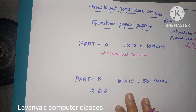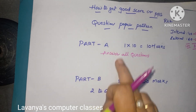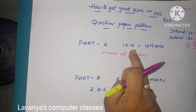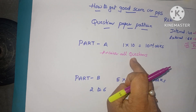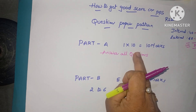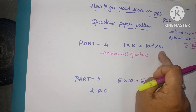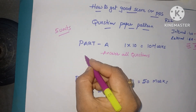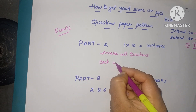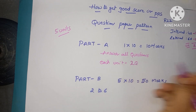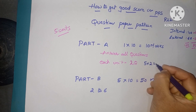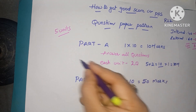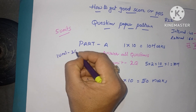The entire external examination is divided into two sections: Part A and Part B. Part A consists of short answer questions only. Totally 10 questions are there and you must answer all — there is no choice. Each question carries 1 mark, so 10 into 1 is 10 marks. There are 5 units, and from each unit 2 questions are coming, so 5 into 2 equals 10 marks.